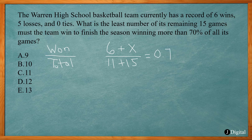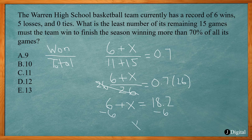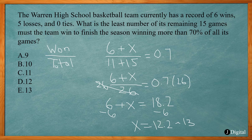Once we have our equation, we can solve for X. That's going to be 6 plus X over 26. Multiply both sides by 26, which gives us 6 plus X equal to 18.2. Then subtract 6 from both sides, so X equals 12.2. They need to win at least 12.2 games. Be careful not to round down to 12, because that won't be enough games. You actually have to round up to 13, so the average would be above 70%. If you had 12, it would be slightly under 70%. So the correct answer is 13.